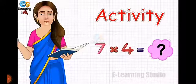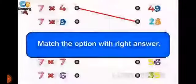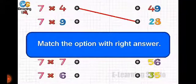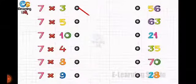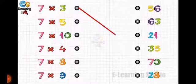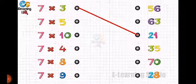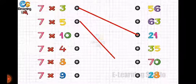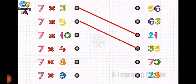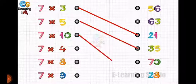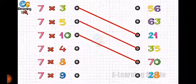Now let's move to the next activity: match the option with the right answer. Okay, let's start. The first one is seven threes are — what is the right answer, children? Twenty-one. Seven threes are twenty-one. Seven fives are thirty-five. Seven tens are seventy.